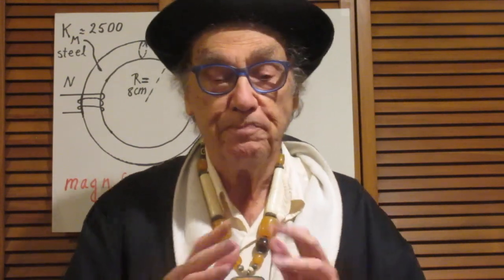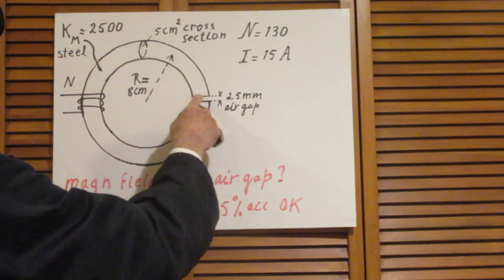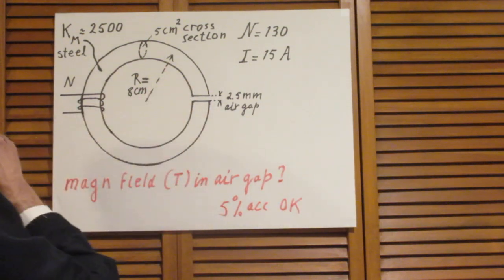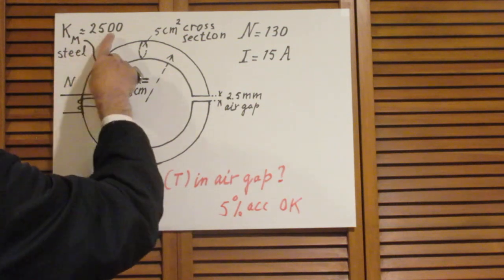When I solve the problem, I will mention that if the air gap is not much much smaller than the radius of the core, you get fringe fields. Those fringe fields bulging out near the air gap will lower the magnetic field. But we don't have to worry about that — you can completely ignore any fringe fields.